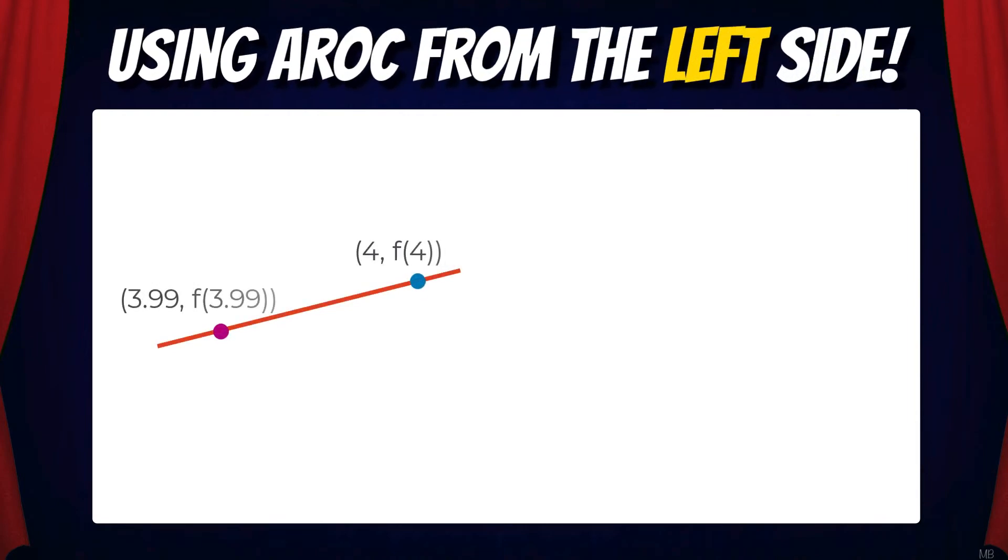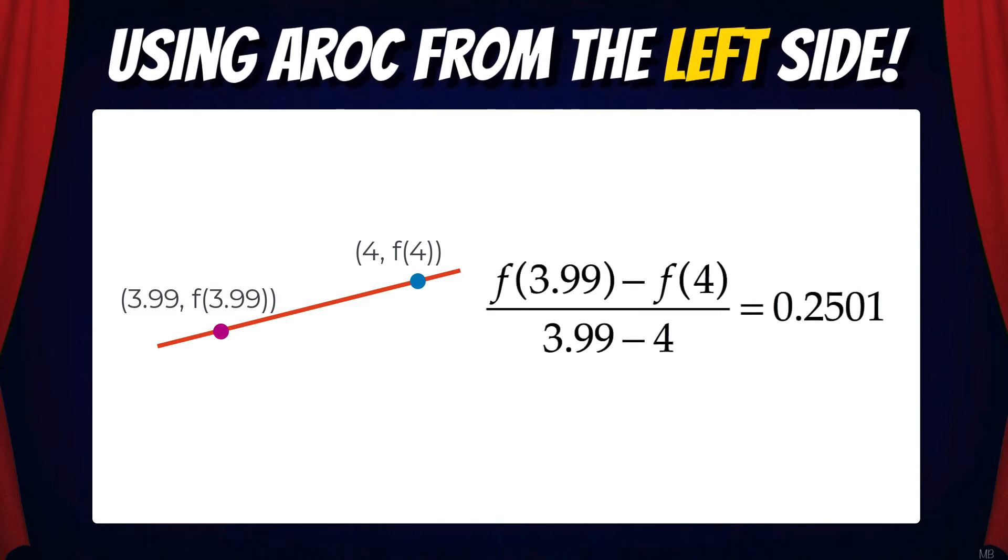But we can also pick a point on the left and get the AROC from the left side. Here I've chosen the point 3.99. Applying the average rate of change formula, we get f(3.99) minus f(4) over 3.99 minus 4. That reduces to 0.2501.